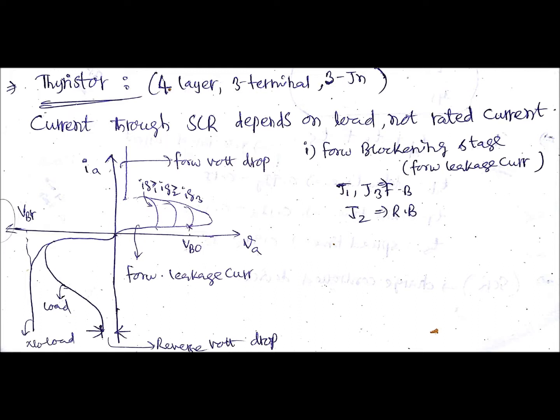For the device to turn on or to allow the current, all three junctions should be forward biased. So when J1 and J3 are forward biased and J2 is reverse biased, only there is a little bit of current which is known as forward leakage current.